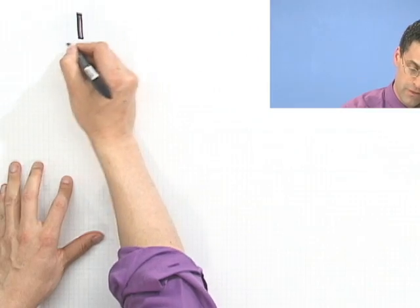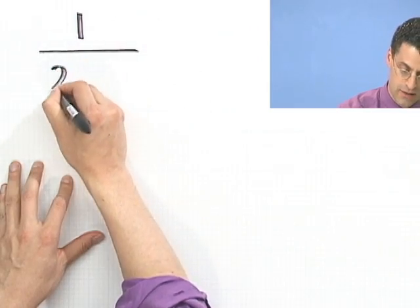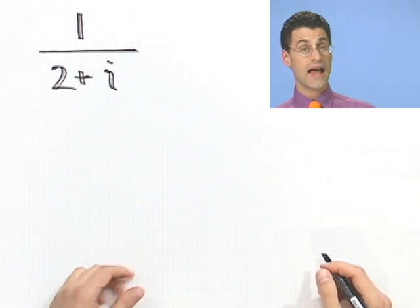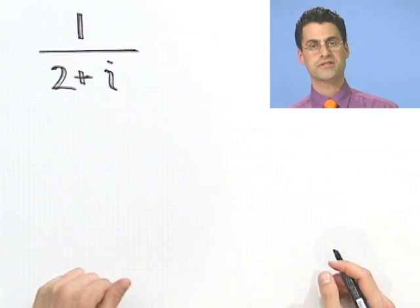Let's find the reciprocal of 2 plus i. So that means I'm looking for 1 over 2 plus i. How would you do that? Well, I'll give you a chance to do it right now. So see if you can figure out what the reciprocal of 2 plus i is.